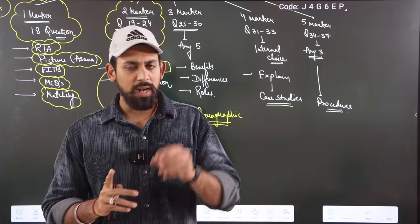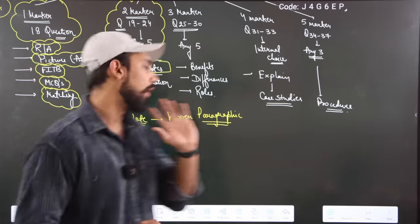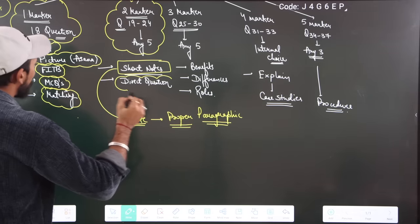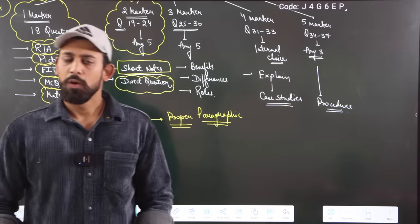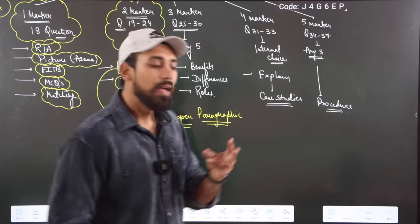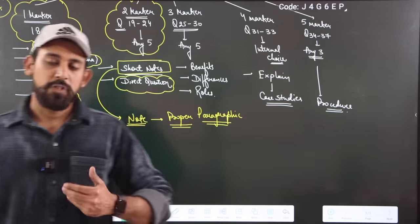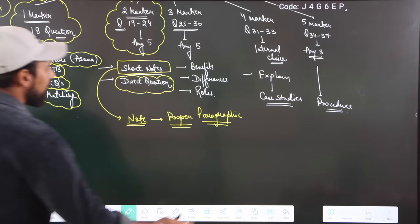If you have a short note question, write it in proper paragraph form. For a direct question with two marks, write three points — but try to write one extra. Three marks normally means three or four points, and for four marks try to write five points. You have to present it well. This is very important for your marks.